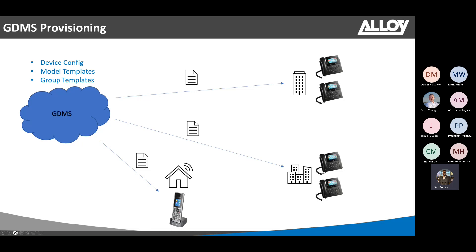The next one is model templates. With this, you can provision an entire model range. Say you have hundreds of GXP2170s — you can provision all of them with one model template. And group templates is similar to model templates, but instead of one particular model, it is limited to one particular series. So you can provision the entire series of GXP or GRP handsets with one template.